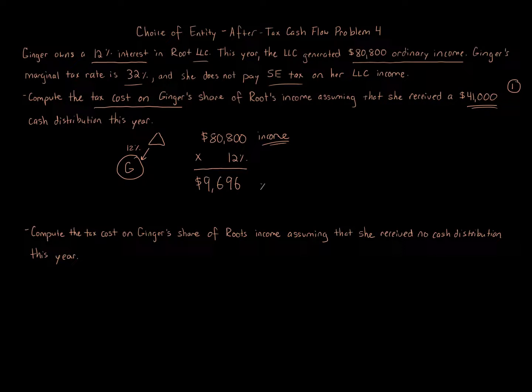$9,696 times Ginger's marginal rate, this 32% rate. $9,696 times 32% gives us the tax cost, which is what Ginger has to pay tax on, dollar for dollar: $3,103.